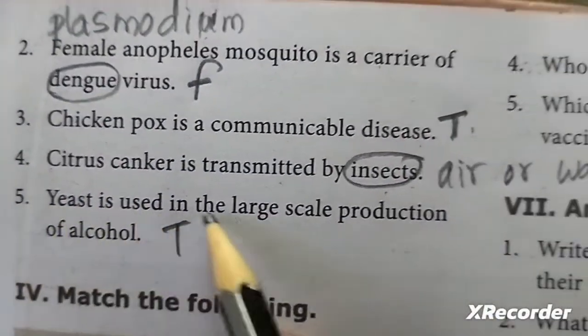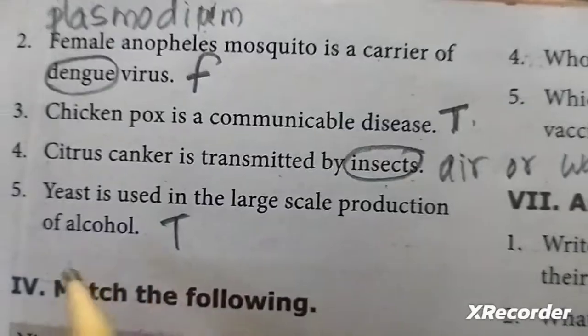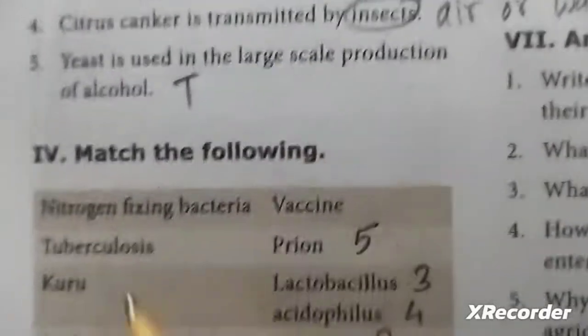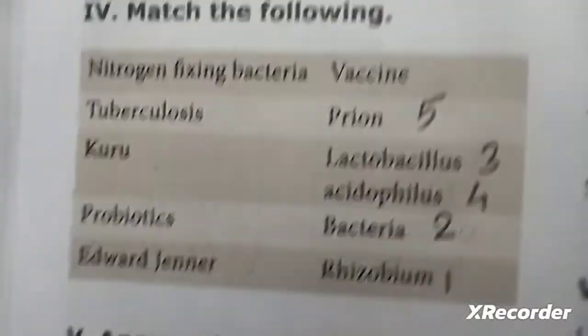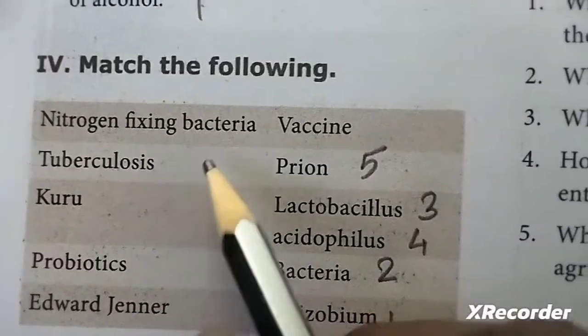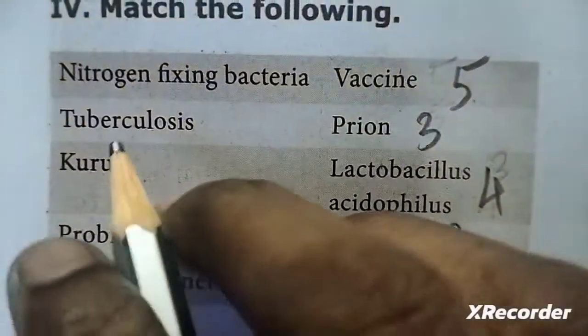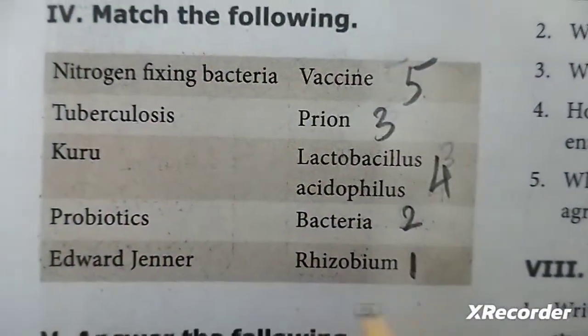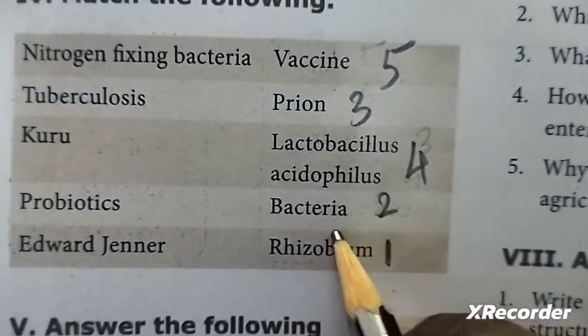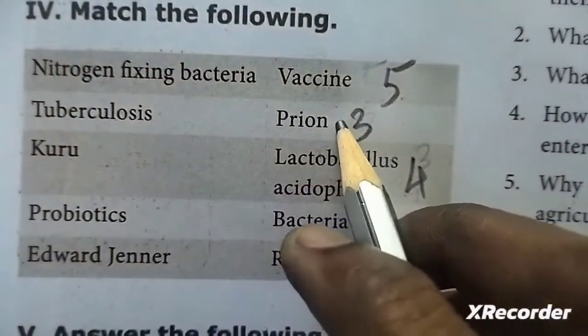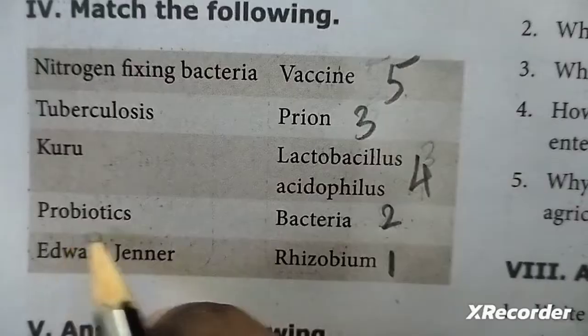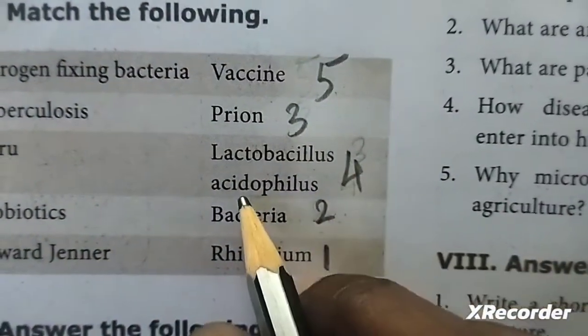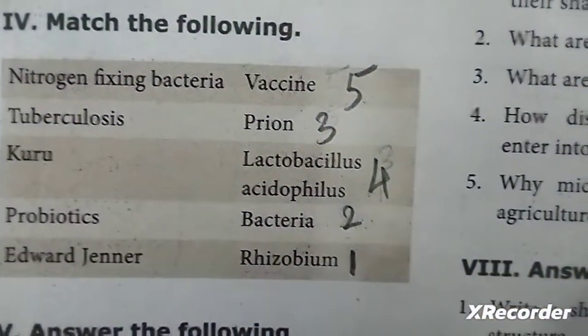Yeast is used in large-scale production of alcohol. Match the following: nitrogen fixation bacteria - rhizobium, tuberculosis bacteria, prion, propionic, lactobacillus, acetobacter. Edward Jenner discovered the vaccine.